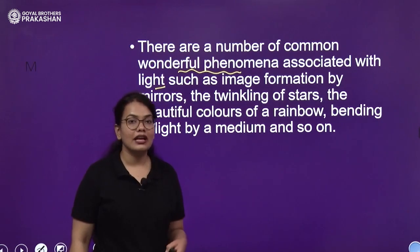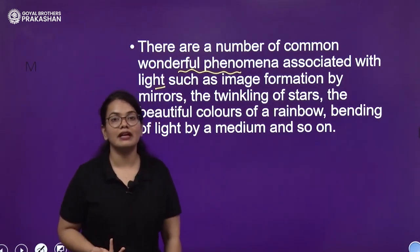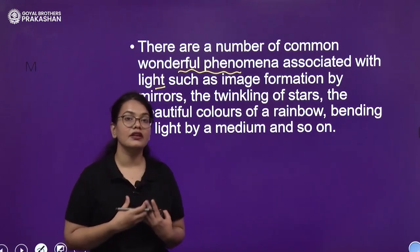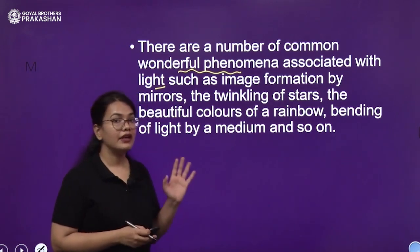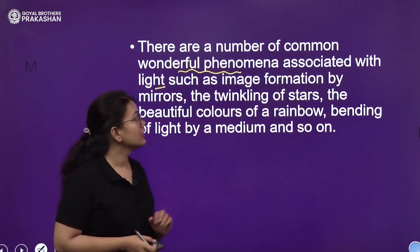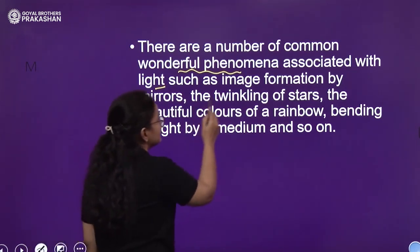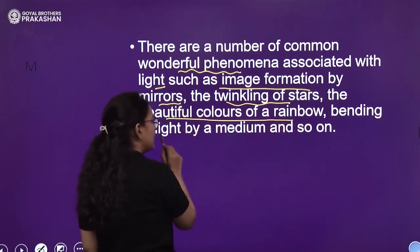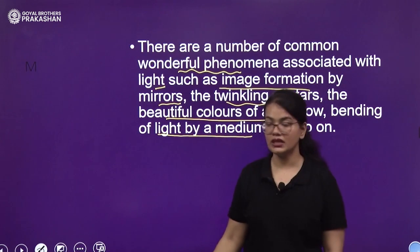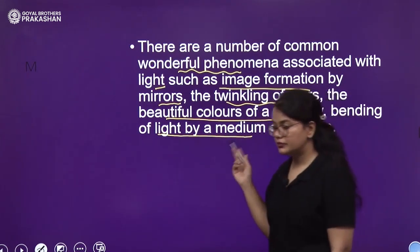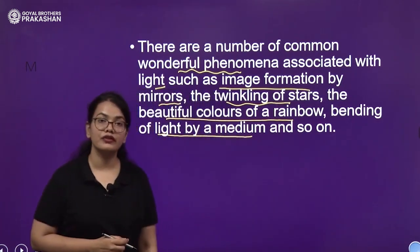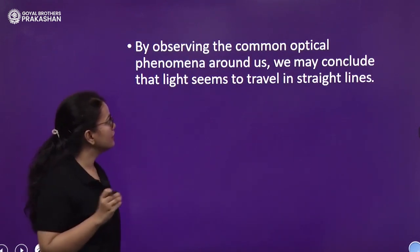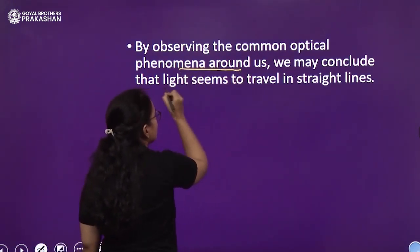Just imagine your life without light — we cannot even imagine it. Light has played such an important role that we are able to perceive and see things and develop new things. The various phenomena associated with light include image formation by a mirror, the twinkling of stars, the beautiful colors of a rainbow, bending of light by a medium, and so on. We shall be discussing some of these phenomena here and others in a later chapter on dispersion and scattering of light.